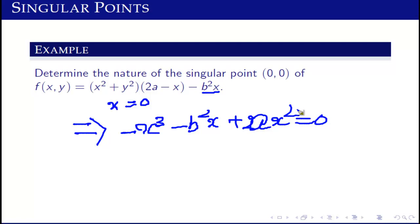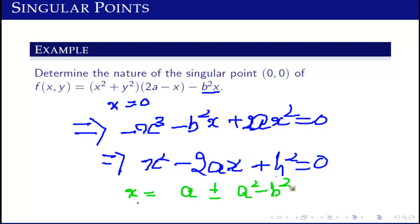y² will be neglected. Further, we will solve this equation: x² - 2ax + b² = 0. This is a quadratic equation in variable x, so we will solve it by applying the quadratic formula: x = a ± √(a² - b²).